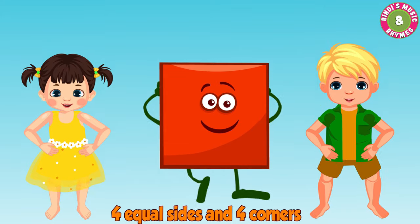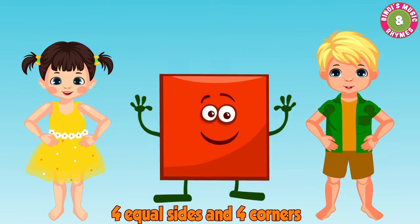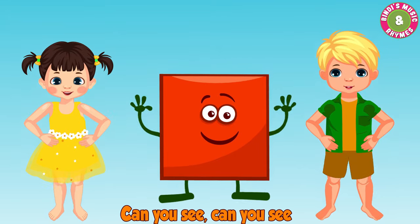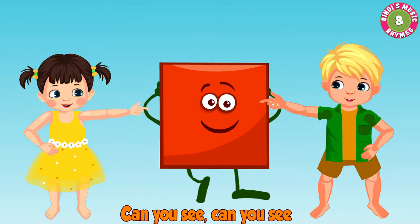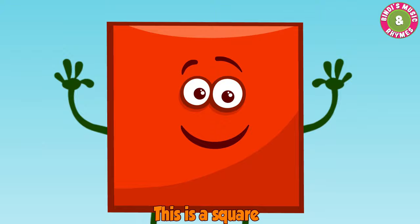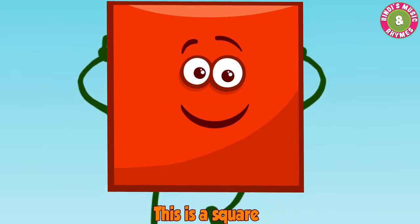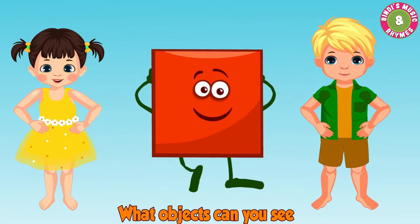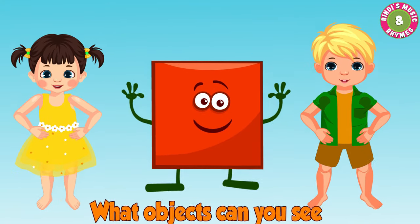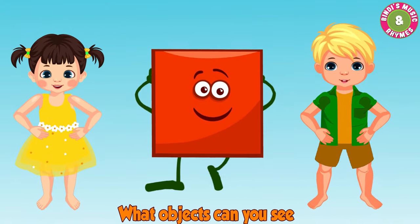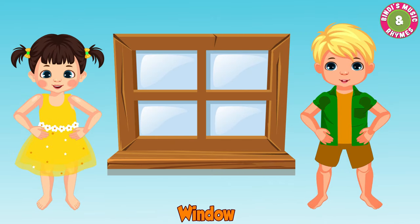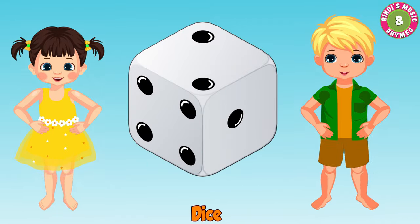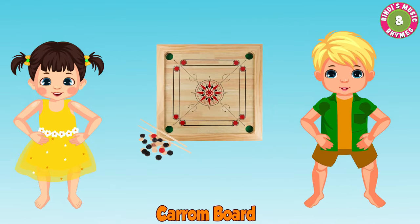Four equal sides and four corners, can you see? This is a square, this is a square. What objects can you see? Window, chessboard, crackers, dice, carom board.